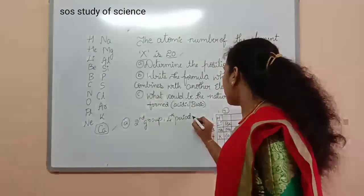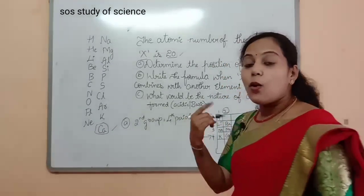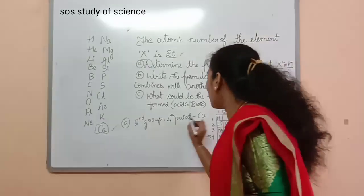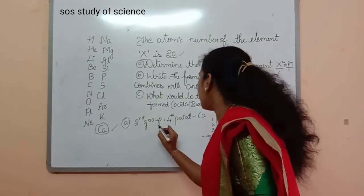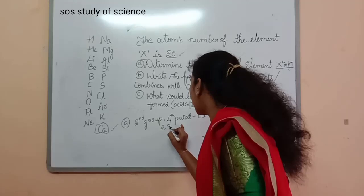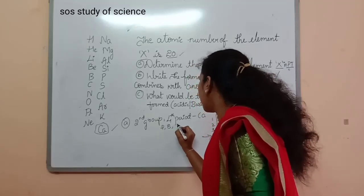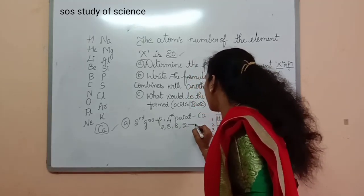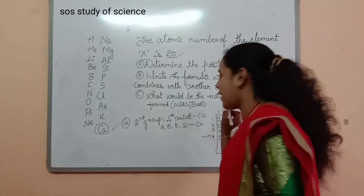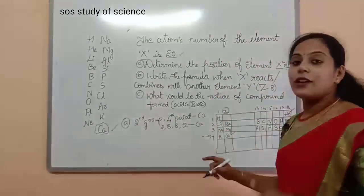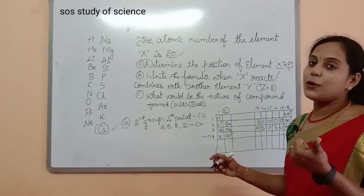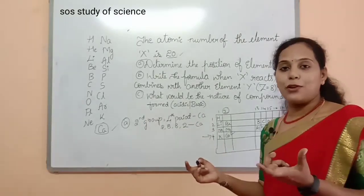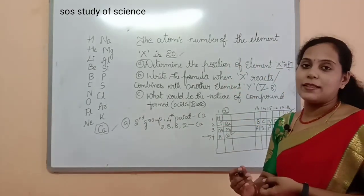The element is calcium. You must also write its electronic configuration. Calcium's atomic number is 20, so its electronic configuration is 2, 8, 8, 2. This is the electronic configuration of calcium. You can check my previous video on how to write the electronic configuration of the first 20 elements.